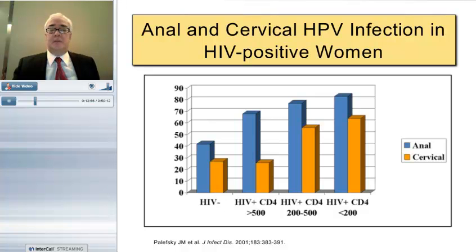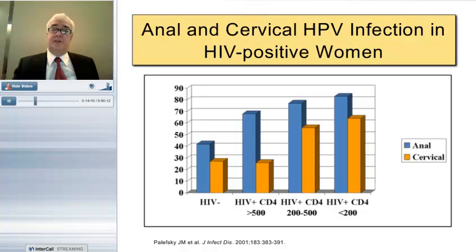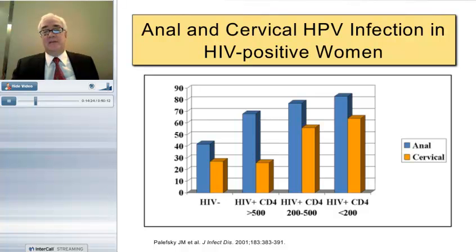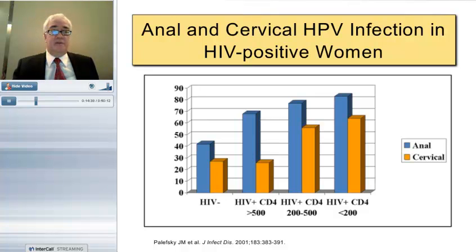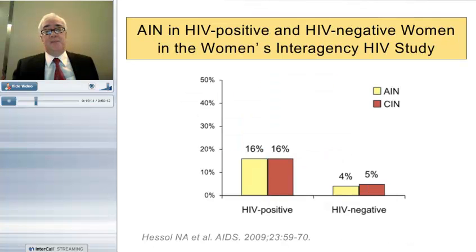For women, an early study comparing anal and cervical HPV infection found that the prevalence of anal infection is surprisingly high. In high-risk women from the Women's Interagency HIV study — including HIV-positive women — anal HPV infection was more common than cervical infection in each group. Several studies have since shown that the prevalence of anal HPV infection is about the same as cervical or higher, and this phenomenon is not limited to the highest-risk women.